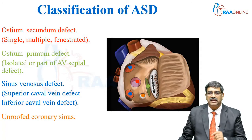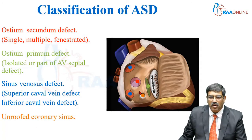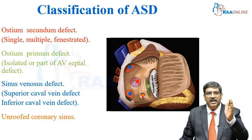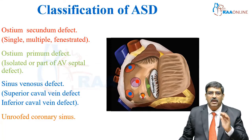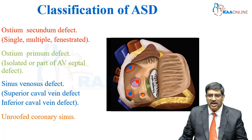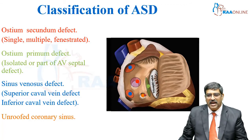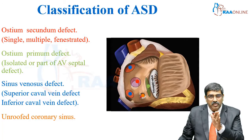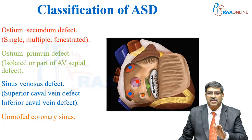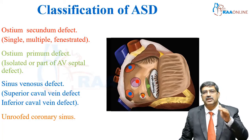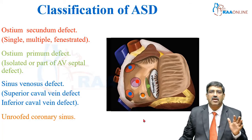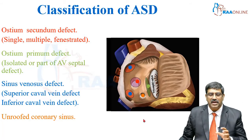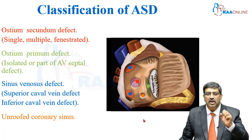The last type is called the coronary sinus ASD. Here, normally the coronary sinus drains into the right atrium and it is covered by the right atrial valve. When the right atrial valve which forms the floor is absent, this coronary sinus communicates with the left atrium. These are all the various types of ASD based on the location.